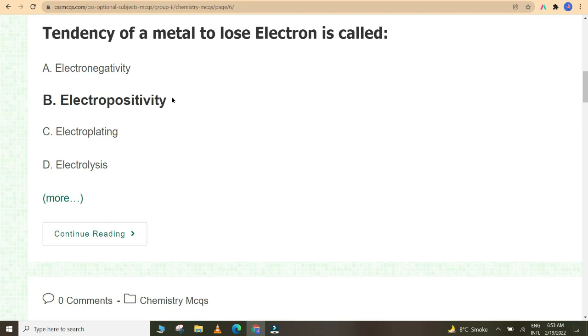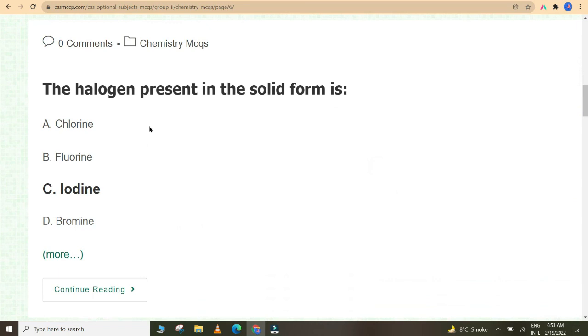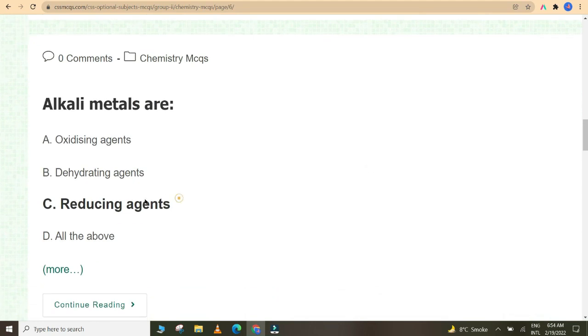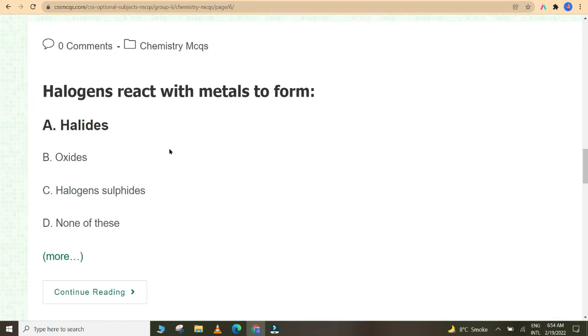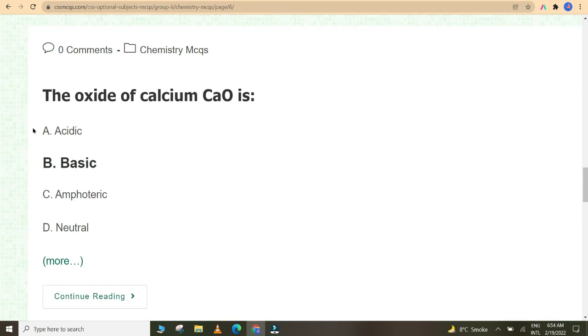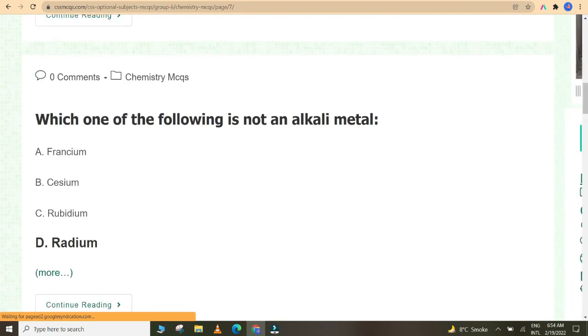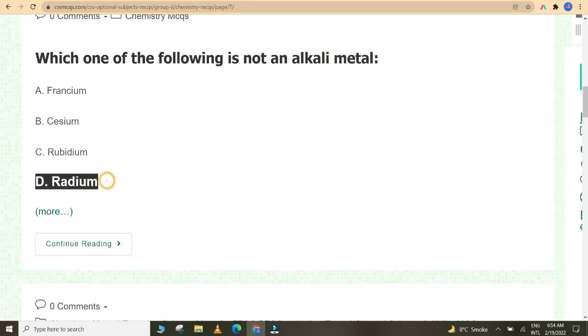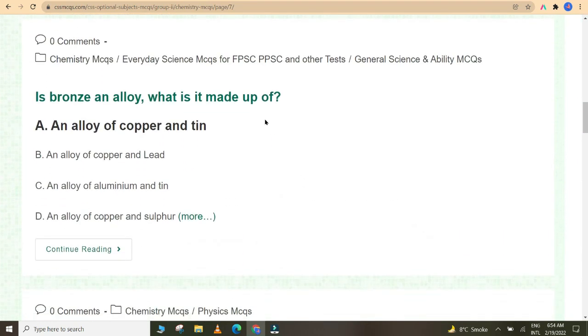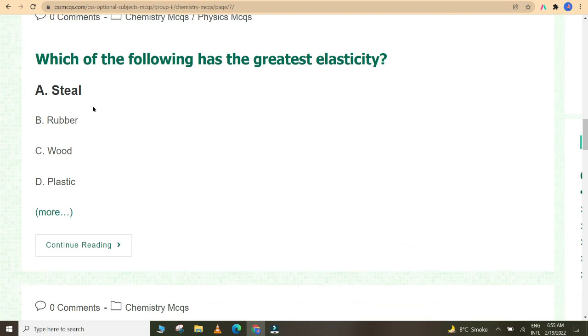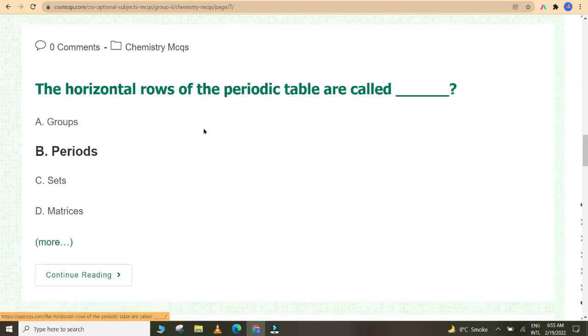Tendency of a metal to lose electron is called electropositivity. The halogen present in solid form is iodine. Among the alkali metals, the metal with the highest ionization potential is lithium. Alkali metals are reducing agents. Halogens react with metals to form halides. The oxide of calcium is basic. The word alkali means ashes. Bromine is a non-metal in liquid state. Which one of the following is not an alkali metal? Radium. In bronze, an alloy, what is it made up of? An alloy of copper and tin. Which of the following has greatest elasticity? Steel. The horizontal rows of the periodic table are called periods.